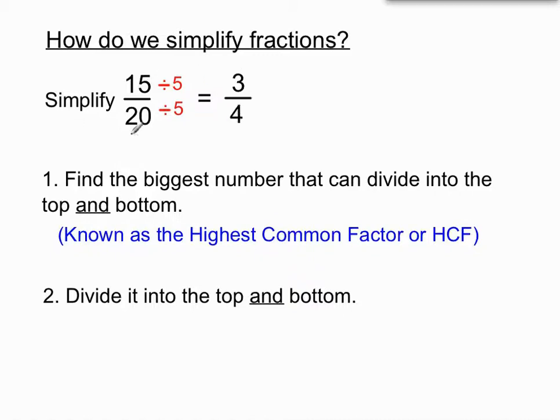On the bottom, 20 divided by 5 goes 4 times. So we've created a simpler fraction of 3 quarters here. We'd say that's been simplified. So 3 quarters is the simplified version of 15 over 20.